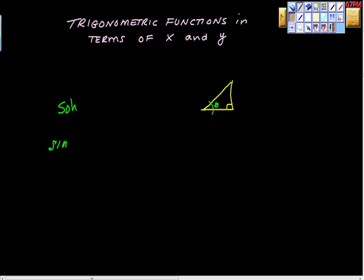Remember SOHCAHTOA and that these are the trigonometric relationships. Sine is opposite over hypotenuse, cosine is adjacent over hypotenuse, tangent is opposite over adjacent. We worked on that. You got really good at it. You learned the Pythagorean theorem. You applied it.